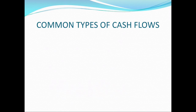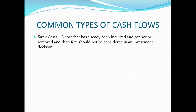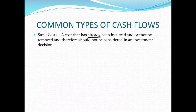There are a few main categories of cash flows. We ask whether each type will only occur if we accept the project. The first type is a sunk cost. A sunk cost is a cost that has already been incurred and cannot be removed, and therefore should not be considered in an investment decision. This is not a cash flow that would only occur if the project is accepted or rejected — it has already occurred.